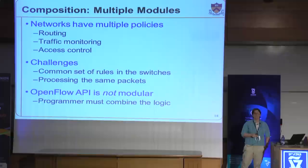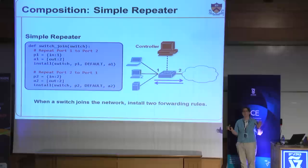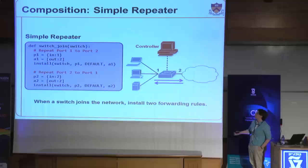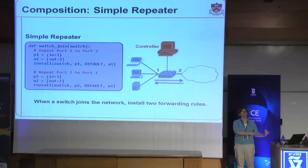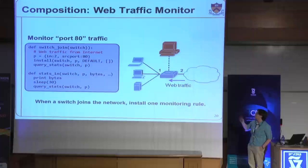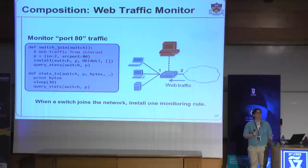To illustrate, take two simple programs: a repeater, which forwards packets arriving on one interface out the other, and a simple monitor that does traffic counting. The repeater installs two rules — traffic arriving on input port 1 goes out on output port 2, and vice versa. The second program does simple monitoring of port 80 traffic, installing a rule with no actions just for the counters, querying it every 30 seconds. Now imagine doing both. You'd think it's as simple as doing A and B, but in practice you get a handwritten program that interleaves the behavior of both — code from the repeater, code from the monitor, and extra code that exists just to disambiguate the behavior of the two programs.